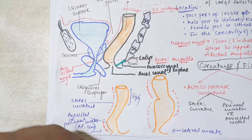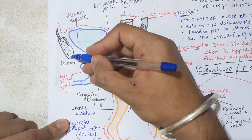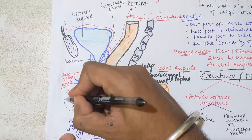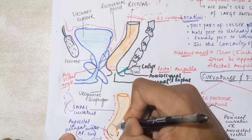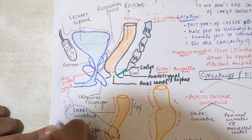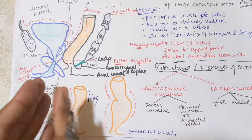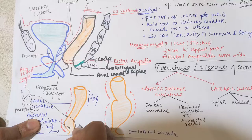The perineal curvature is held by the puborectalis muscle, which is a part of the levator ani muscle. Consider the pubic symphysis: the puborectalis forms a sling around the anorectal junction, holding this curvature in place. This sling of puborectalis creates and maintains the anorectal angle. The perineal curvature is located at the level of the coccyx and S5 sacrum.